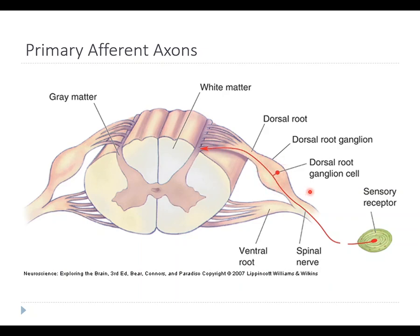A ganglion, remember, is a cell or group of cells in the peripheral nervous system, so technically we're in the peripheral nervous system there.